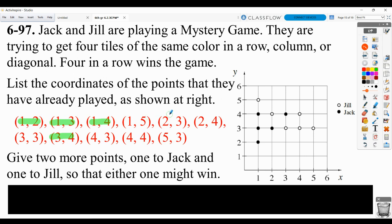So then the other ones were Jill: 1, 5, 2, 3. Oh, I apologize. Jack's was 2, 3. 2, 4 was Jill's. 3, 3 was Jill's. 4, 3, 4, 4, and 5, 3.